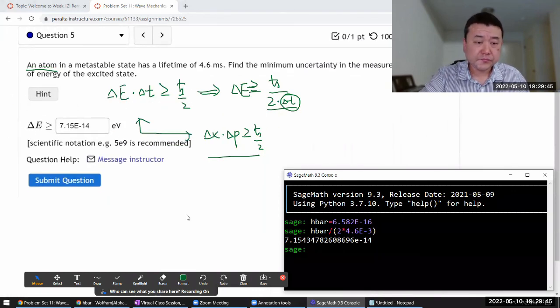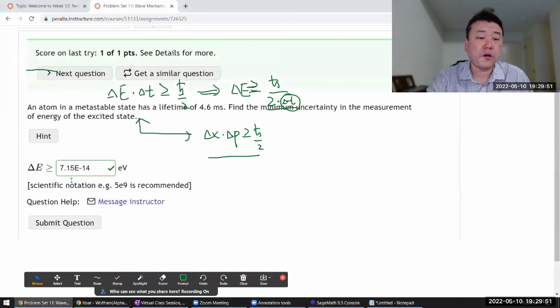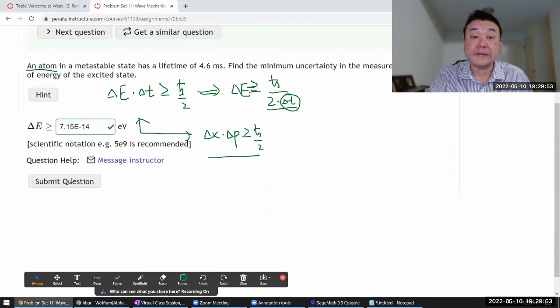So it's a pretty small uncertainty. And I think the reason question says the metastable is 4.6 milliseconds, that's super long for an atomic excited state. Like that's a stable state. The spectral lines associated with such long lived states will be super sharp. And that's what this small uncertainty in energy corresponds to.